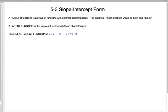We're going to start with a couple definitions here. A family of functions is a group of functions with common characteristics. For instance, in this video, I'm going to be talking about linear functions. So they're all going to be a family of linear functions. A parent function is the simplest function with these characteristics. So in this case, the linear parent function is just y equals x. And the graph of y equals x is just a line that goes straight through the origin.